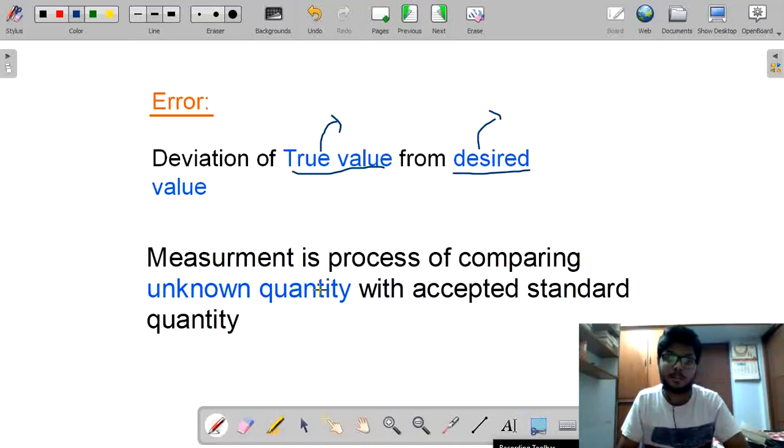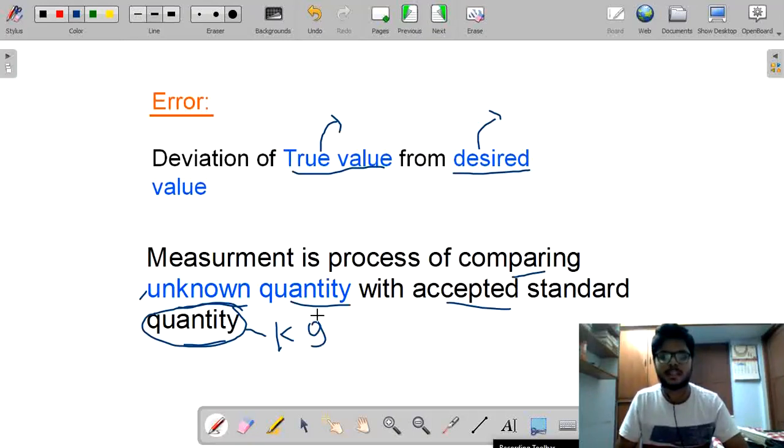And here measurement is a process of comparing unknown quantity with accepted standard quantity. For example, I need to take weight of sugar. How I will measure? Initially I don't know the weight of sugar. So, it is an unknown quantity with accepted standards of quantity. How I will measure sugar in terms of kg? It is called an accepted standard quantity. Here, what is a standard quantity? Like kg, Liter. Like that, we will measure our standard quantities.